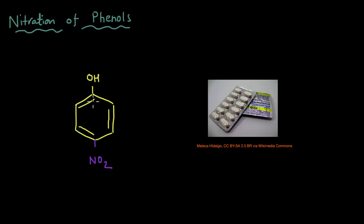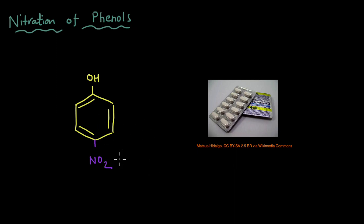The structure shown here is of paranitrophenol, which is basically an NO2 group added to the para position. The making of paranitrophenol is one of the intermediate steps in the production of paracetamol, which is usually prescribed by doctors for fevers. So how do we make this paranitrophenol? There are some clues in the name itself — we're going to be taking phenol and then nitrating it.